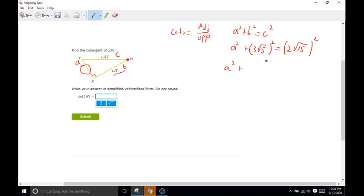Now let's factor it out. Three squared is nine times the square root of five squared is just five, and equals two squared is four, and then the square root of 15 squared is just 15.